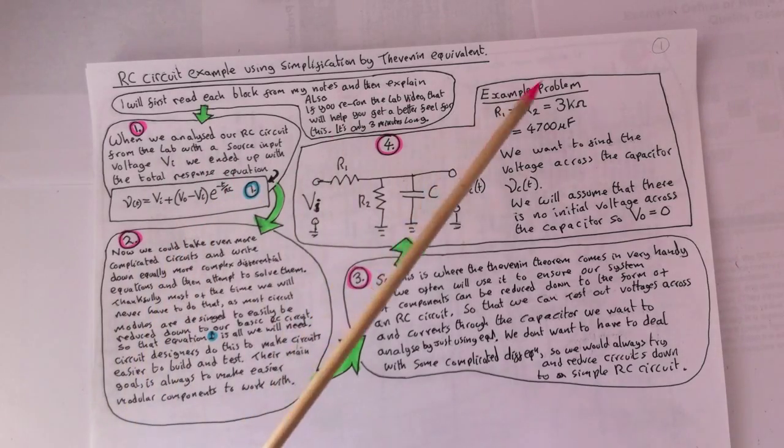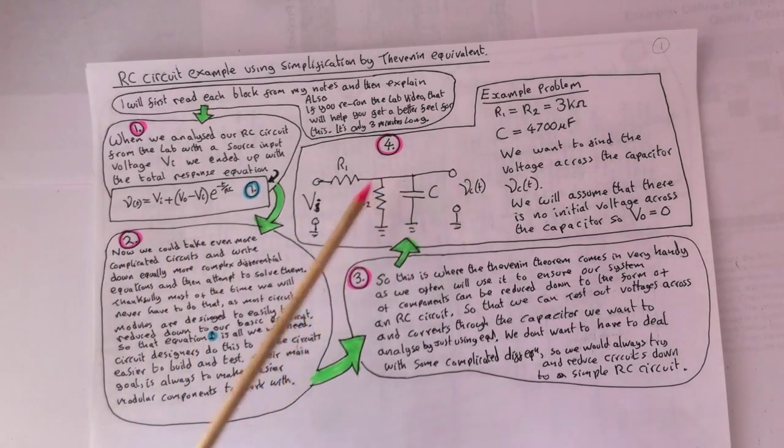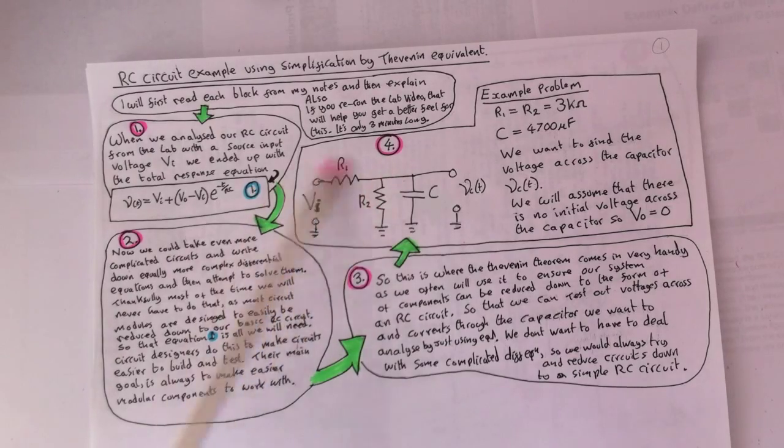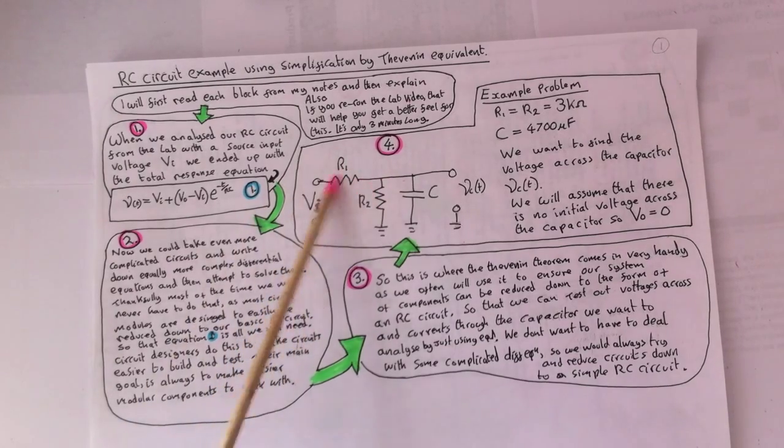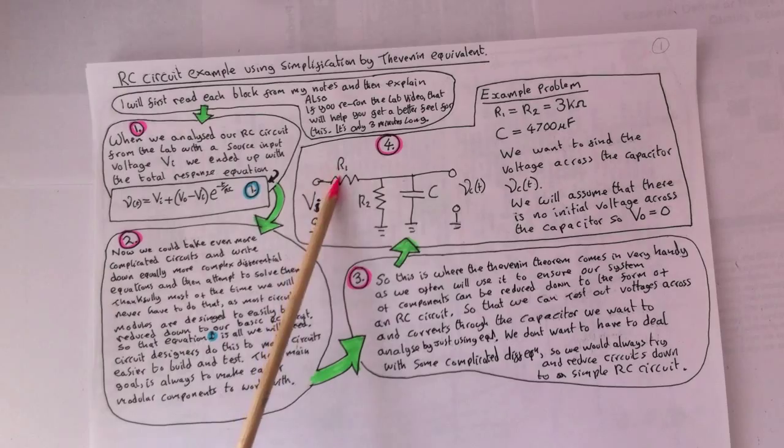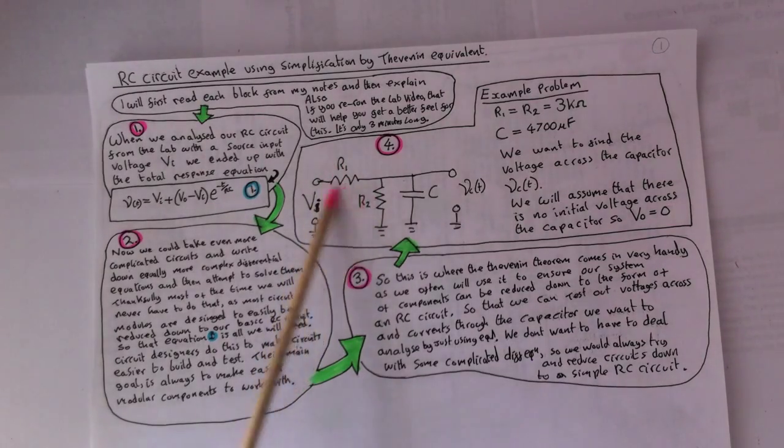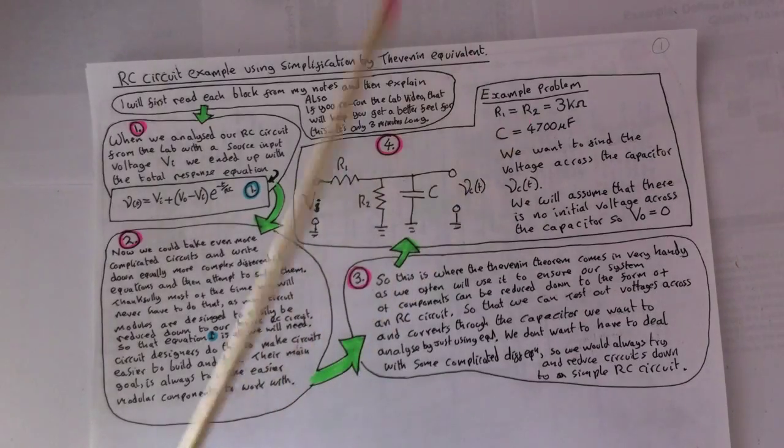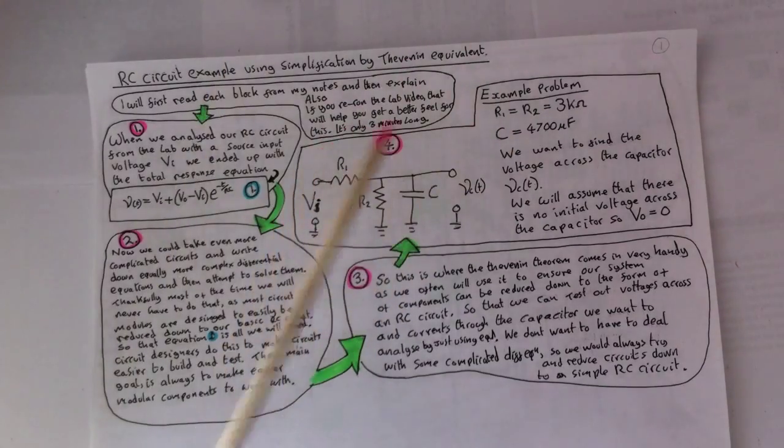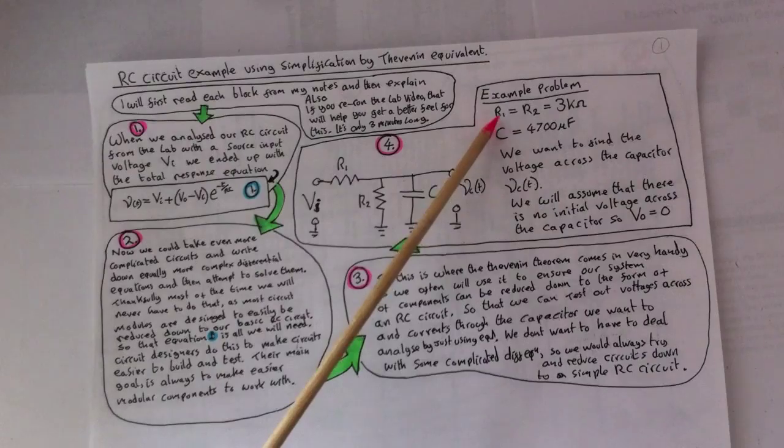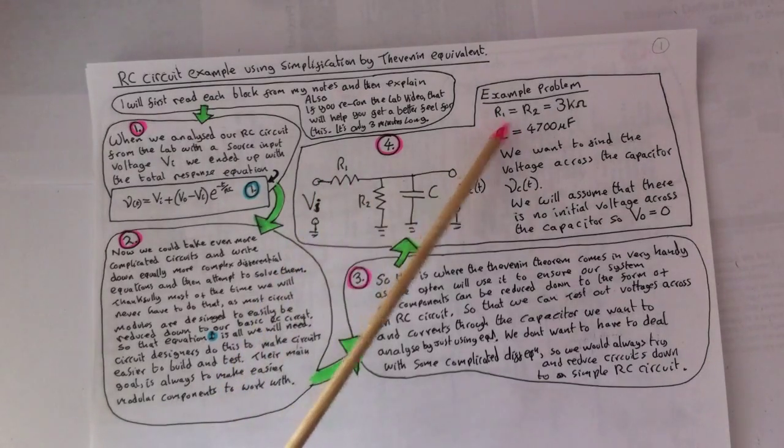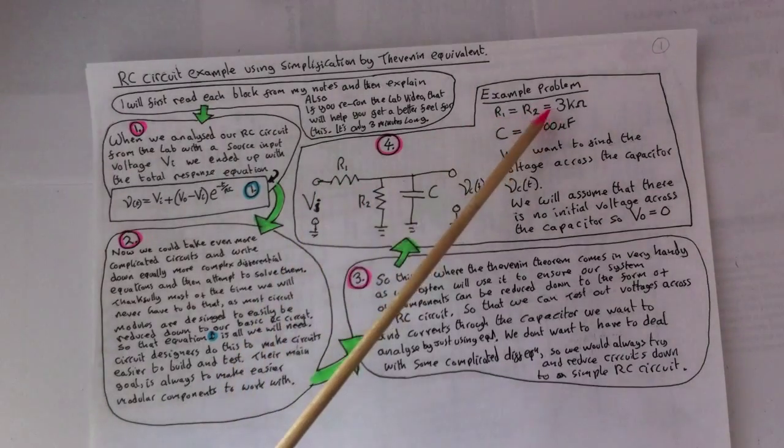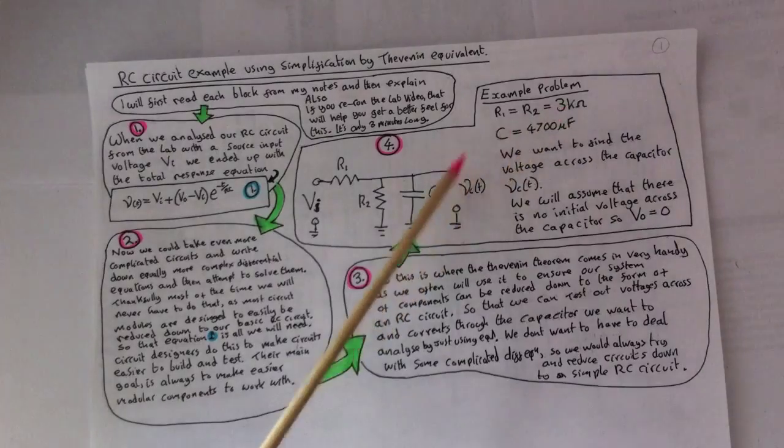So, example problem, just to give you an idea how this works. So this here could be an extremely complex circuit. Let's say we've managed to get it down to these two resistors here so far. So at this stage we can go through this example problem and I'll explain. For this example, we'll let R1 equal R2 and we'll say that they're both equal to three kilo ohms.